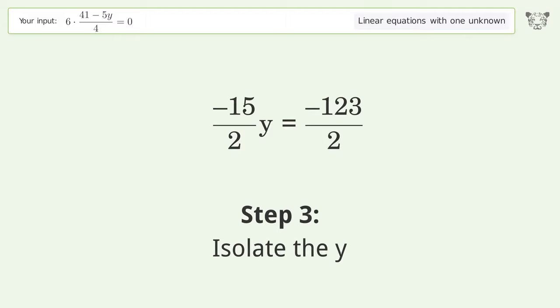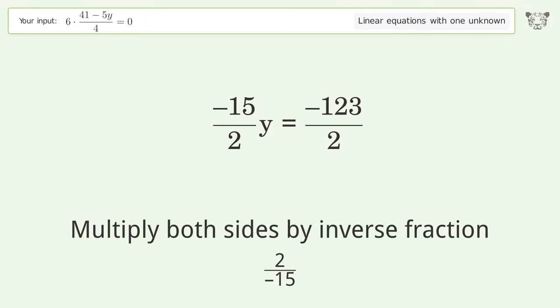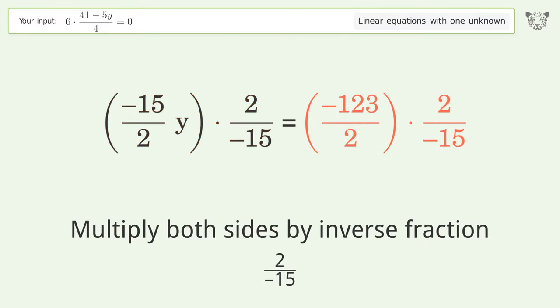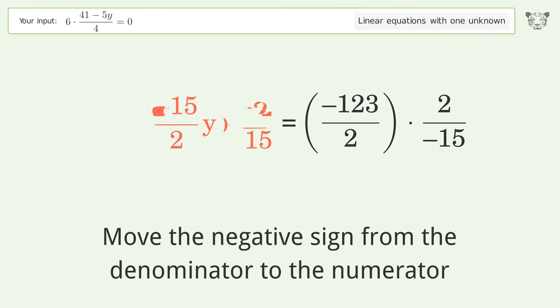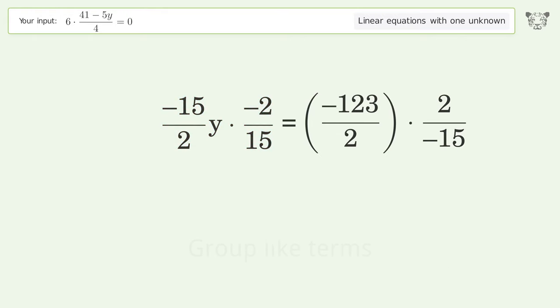Isolate the y. Multiply both sides by the inverse fraction 2 over negative 15. Move the negative sign from the denominator to the numerator and group like terms.